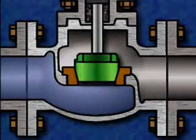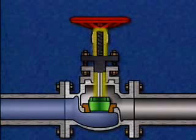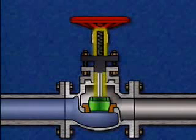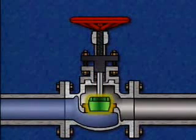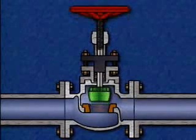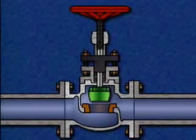The seat is used together with a movable component called a disc to control flow through the valve. The disc is attached to the stem, and the stem connects to the handwheel. The handwheel is used to screw the stem in and out, which in turn lowers or raises the disc. If the handwheel is turned in the open direction, the stem moves up and the disc moves away from the seat, increasing flow through the valve. When the disc reaches its limit of travel, the valve is fully opened and maximum flow can pass through.